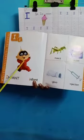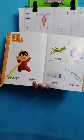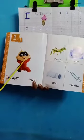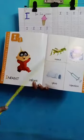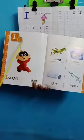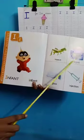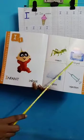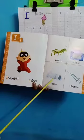I for infant. I for infant. I for insect. I for insect. I for ink pot. I for ink pot. I for igloo.